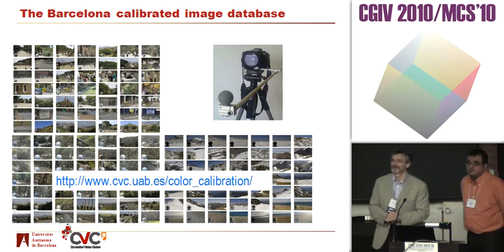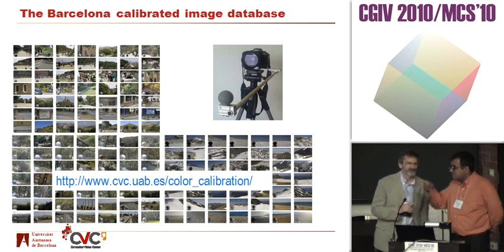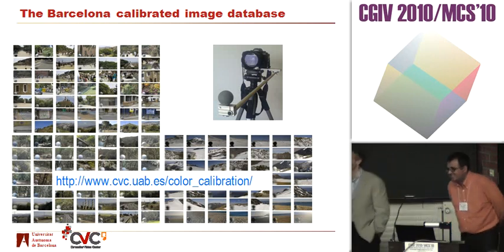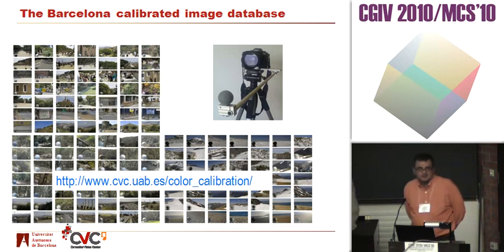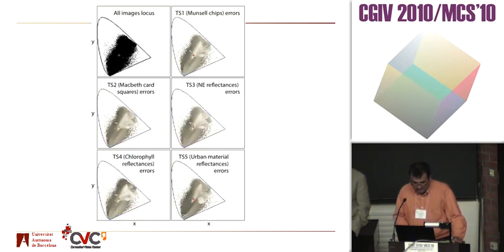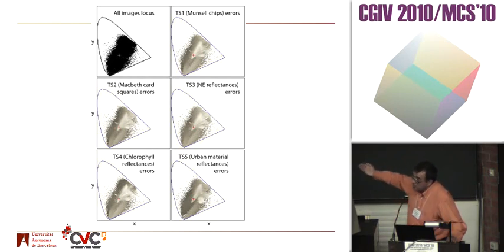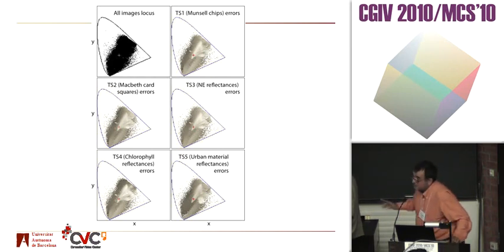Do you have an idea of how the errors are distributed in the color space — where the errors are larger? Yes, I took that slide off. This is for the different types of training sets. The scale is logarithmic in the gray levels, and the white is where the largest errors are concentrated, for the different training sets.